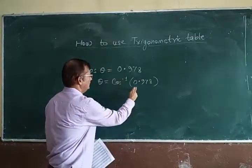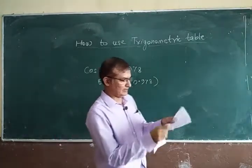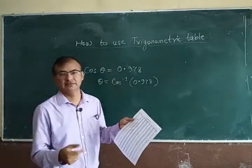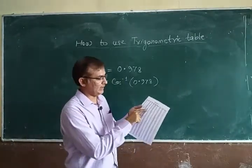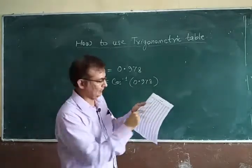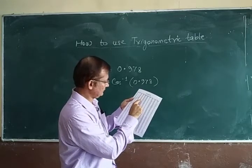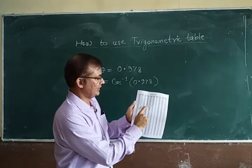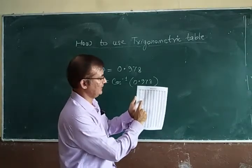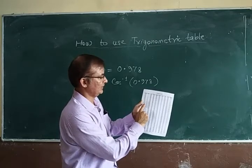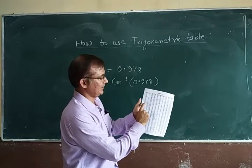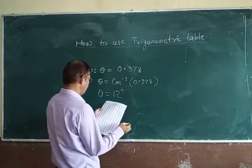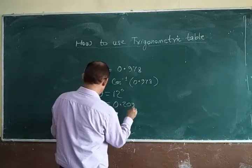Now we have to calculate the value of cos inverse 0.978. You look through the table and find that cos theta equals 0.978. The value in degrees is 12 degrees, and in radians it is 0.209. So theta is equal to 12 degrees, or if in radians, 0.209 radians.